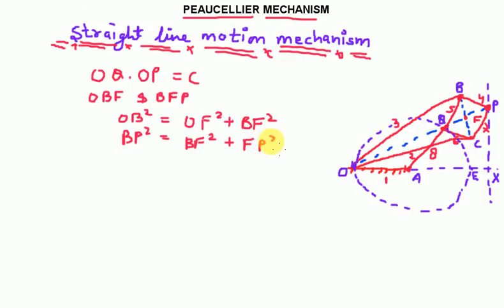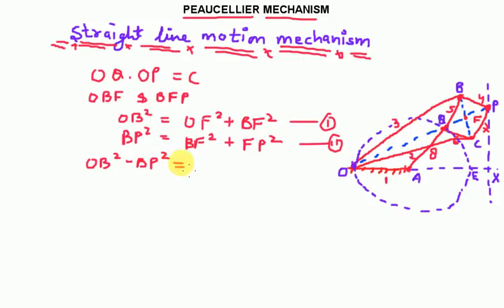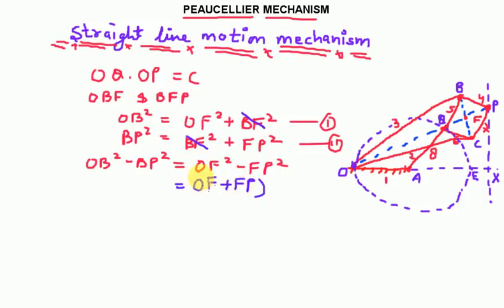Since OBF is a right angle triangle and BFP is also a right angle triangle: BP² equals BF² + FP², and OB² equals OF² + BF². Subtracting equation 1 from the second, OB² − BP² equals OF² − FP². This difference of squares can be written as (OF + FP)(OF − FP).